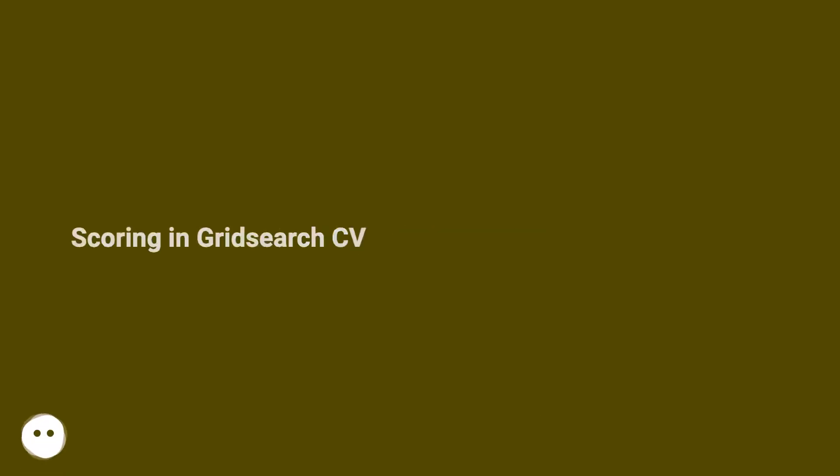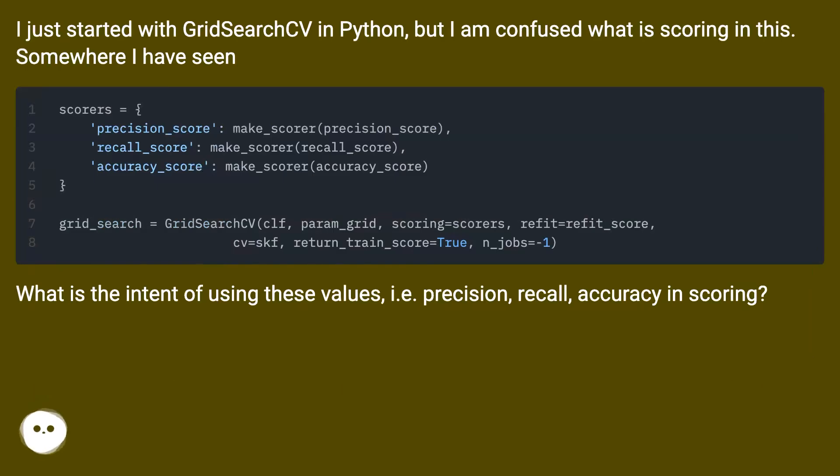Scoring in GridSearchCV. I just started with GridSearchCV in Python, but I am confused what is scoring in this. Somewhere I have seen.